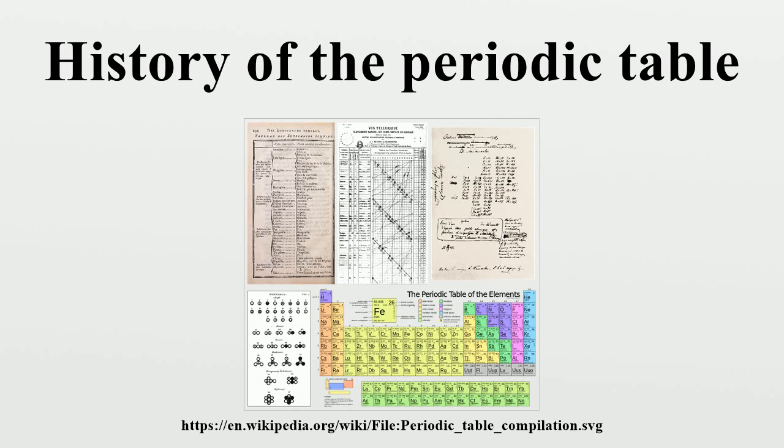A few months after Mendeleev published his periodic table of the known elements, predicted new elements to help complete his table and corrected the atomic weights of some of the elements, Meyer published a virtually identical periodic table. Meyer and Mendeleev are considered by some historians of science to be the co-creators of the periodic table, but Mendeleev's accurate prediction of the qualities of undiscovered elements enables him to have the larger share of the credit.